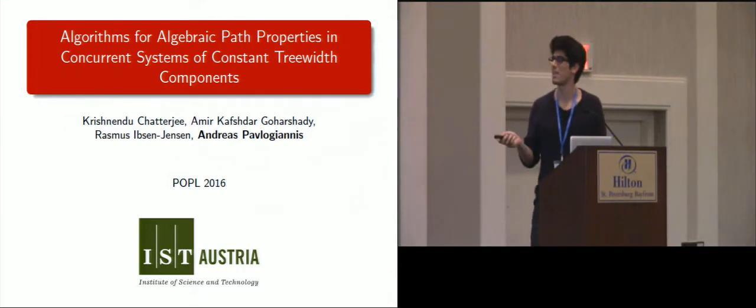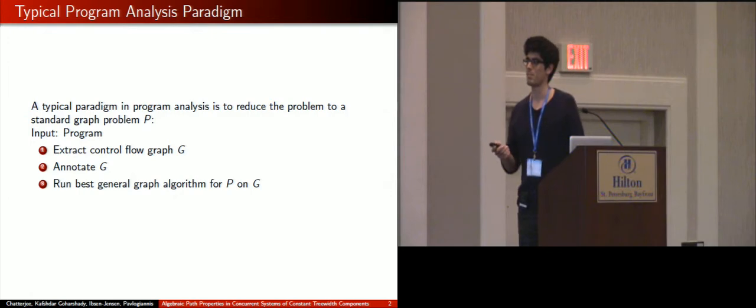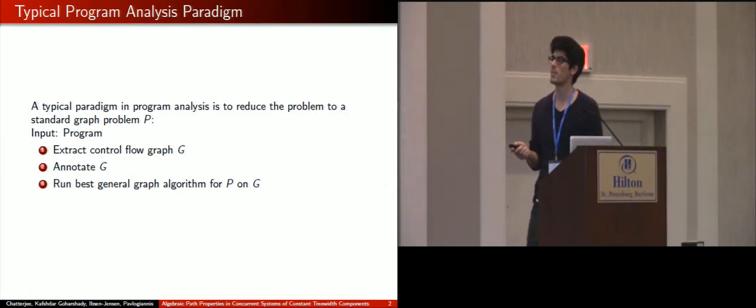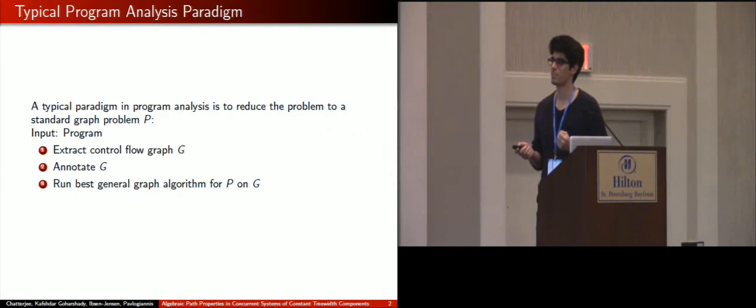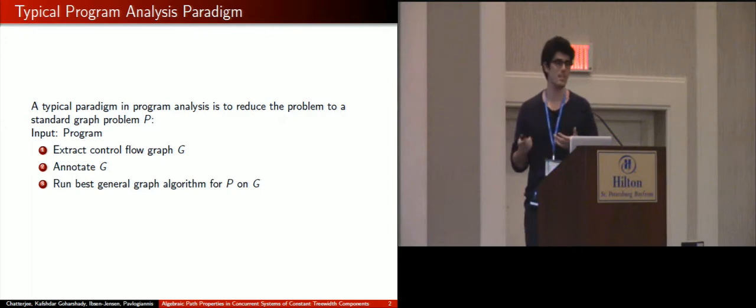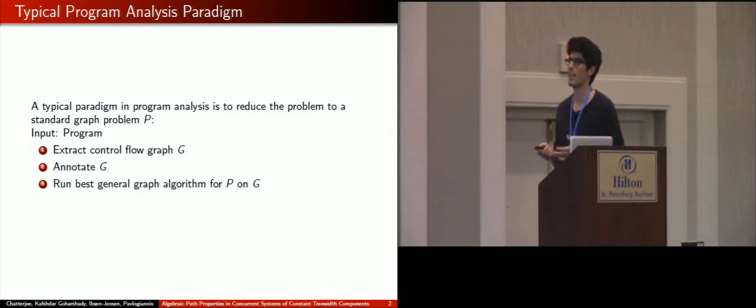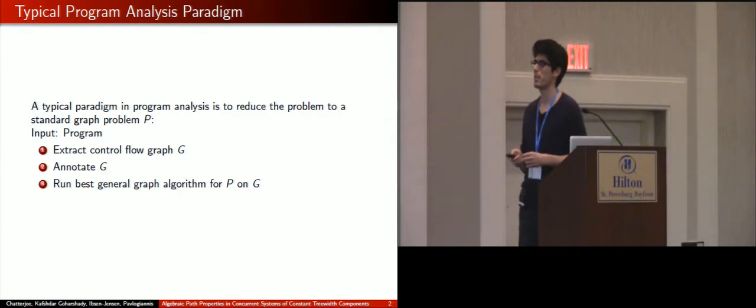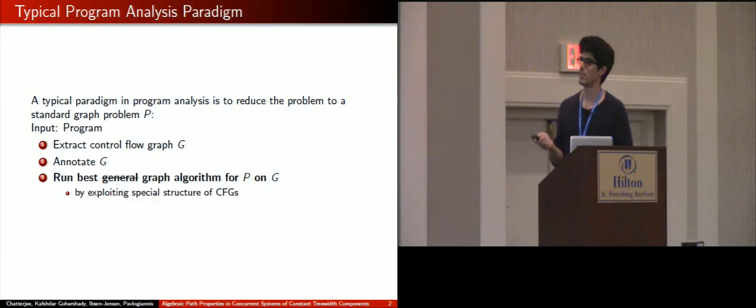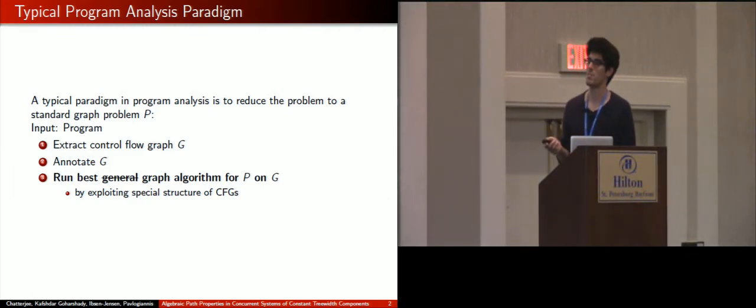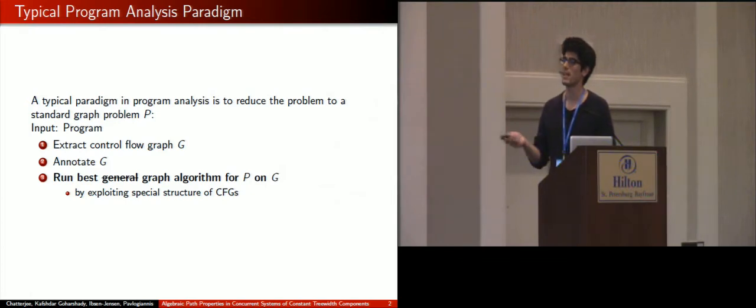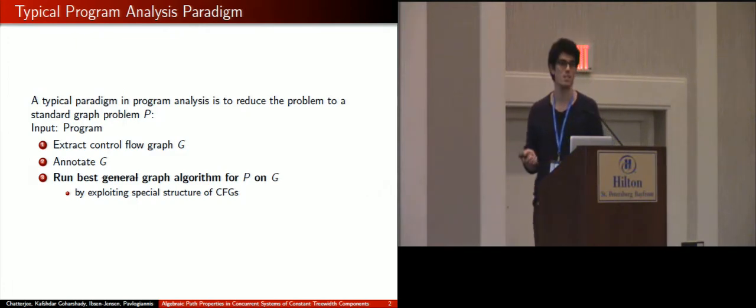Let me start by giving you where our work stands in the big picture. A typical paradigm for program analysis is to take some analysis problem and reduce it to some standard graph problem P. By means of the following procedure: first we have the program as input, we extract its control flow graph, we annotate it with some annotations that are relevant for our problem, and then we run some general graph algorithm on the control flow graph for solving this problem P. Our work focuses on the third step of this process. In particular, we bring some algorithmic improvements for solving some graph problem that is frequently used in this scheme, and we do so by exploiting the special structure that control flow graphs of programs typically have. So instead of having a general algorithm, we have some dedicated one for the task.